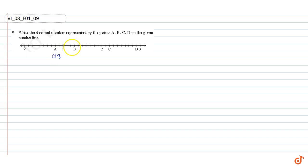B represents three steps greater than 1, that is 1.3.